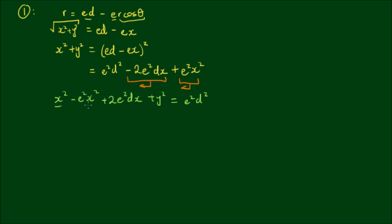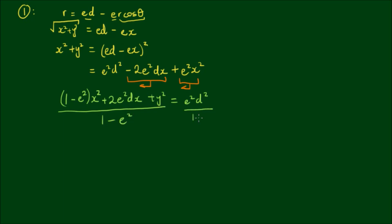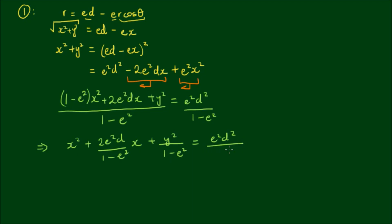Factoring the front two x² terms gives (1 − E²)x². Dividing both sides by (1 − E²), the expression becomes x² + [2E²D/(1 − E²)]x + y²/(1 − E²) = E²D²/(1 − E²).